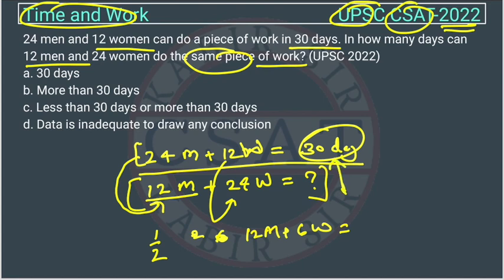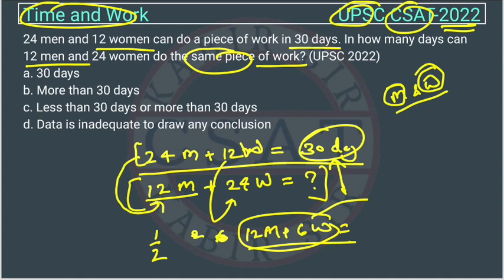But here they have decreased the man but increased the woman, and we don't know the relationship between man and woman. Like who is more efficient, man or woman? We don't know that, or they may be equal.